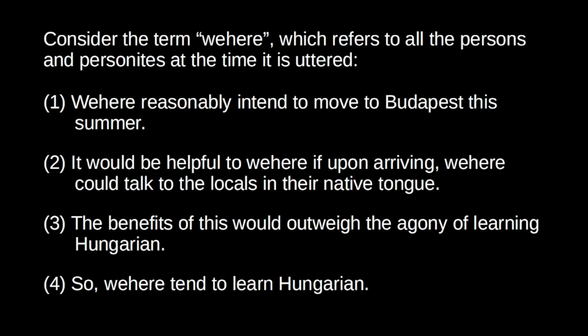Premise one is clearly false because many personites cannot reasonably intend to move to Budapest this summer — they will definitely cease to exist before the summer. It would be like me intending to buy a farm on Fiji in three million years. Against premises two and three, the personites who will not make it to Budapest will obviously not gain any benefit from learning Hungarian. So if you reason this way, it is clearly flawed, and 'we here' will not form the intention to learn Hungarian. If we thought in ways that appropriately considered the interests of personites, we would never make prudential sacrifices.